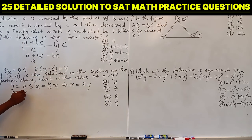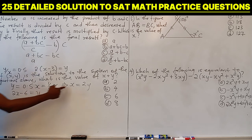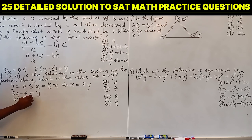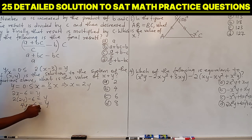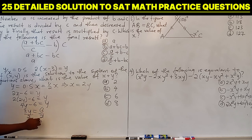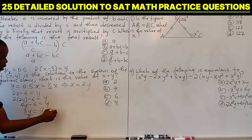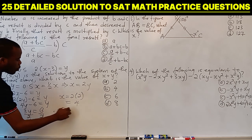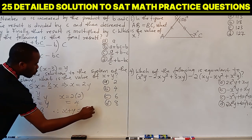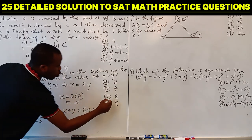From equation two, opening the bracket gives 2X minus 6 equals Y. Substituting X equals 2Y gives 2(2Y) minus 6 equals Y, so 4Y minus 6 equals Y, and 4Y minus Y is 3Y. Taking 6 to the right-hand side gives Y equals 2. Since Y is 2, X equals 2 times 2 which is 4. Therefore X plus Y equals 4 plus 2 which is 6, so the answer is C.